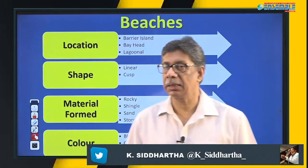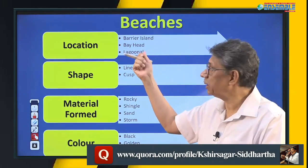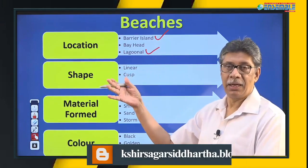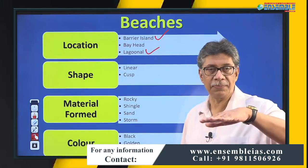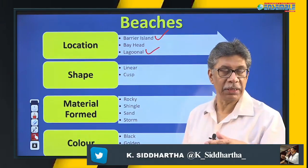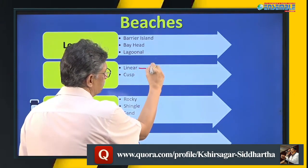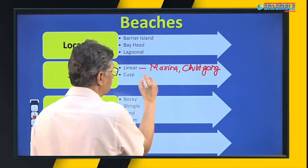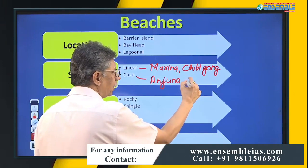Beaches are classified on the basis of location: bayhead beaches are located at the head of a bay; lagoonal beaches are at the head of a lagoon; barrier island beaches develop on barrier islands. On the basis of shape, beaches can be linear — for example, Marina Beach in Chennai — or cusp-shaped, like Kovalam and Anjana in India. Shilinda Gaung is another linear example.